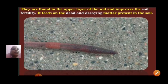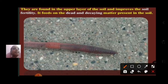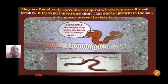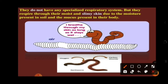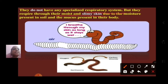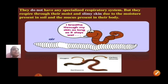Earthworms are found in the upper layer of the soil and help in improving the fertility of the soil. They feed on dead and decaying matter present in the soil. They do not have any specialized respiratory system, but they respire through their moist and slimy skin. Due to the moisture present in the soil and the mucus present in their body, their body remains always moist, and this moist body helps in the exchange of oxygen and carbon dioxide.